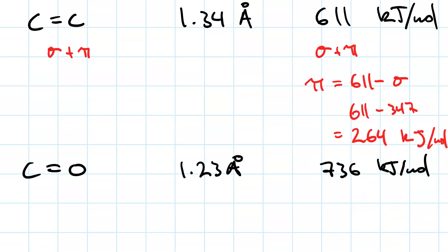But not all double bonds are created equal either. For instance, a CO double bond is shorter than a CC double bond, at 1.23 angstroms. And it's stronger. It has 736 kJ per mole. Again, we see the trend that a shorter bond is stronger. Also, a double bond is stronger than a single bond.